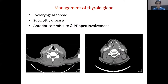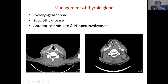After skeletonization, the next step is management of the thyroid gland. The thyroid gland lies anteriorly over the second to fourth tracheal rings and can be involved by disease through direct exolaryngeal spread via the cricothyroid membrane or thyroid cartilage destruction. On imaging, exolaryngeal spread, subglottic disease, anterior commissure involvement, and pyriform apex involvement must be noted to decide on hemithyroidectomy versus total thyroidectomy.